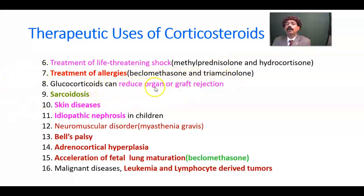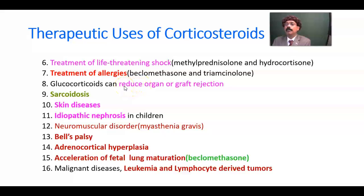Glucocorticoids can reduce organ or graft rejection, so after receiving an organ or graft, patients should be on glucocorticoids to prevent rejection. Sarcoidosis is a chronic granulomatous disease with multiple granulomas but without caseation; it may affect any organ, is of unknown cause, and is incurable but can be managed by corticosteroids — especially glucocorticoids.